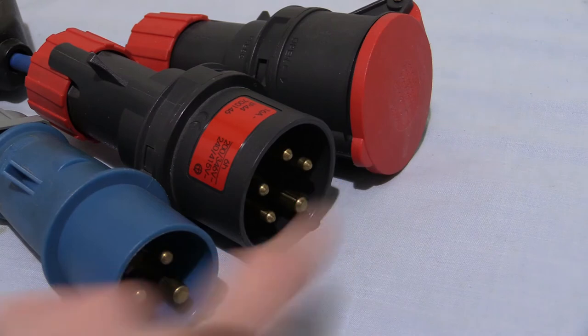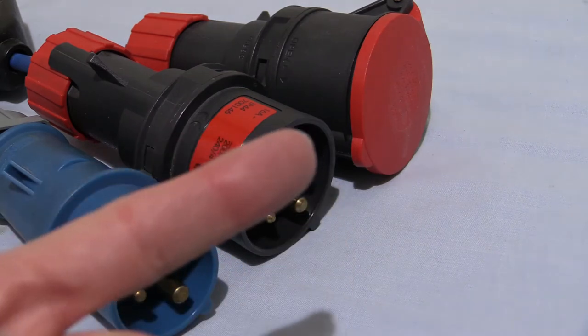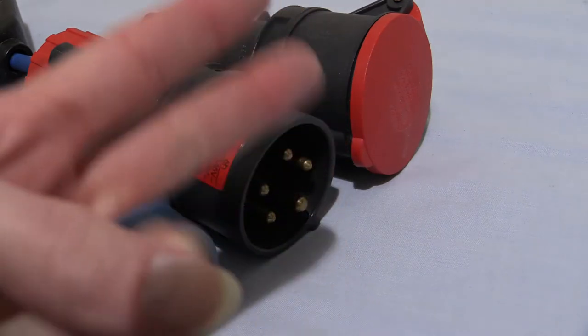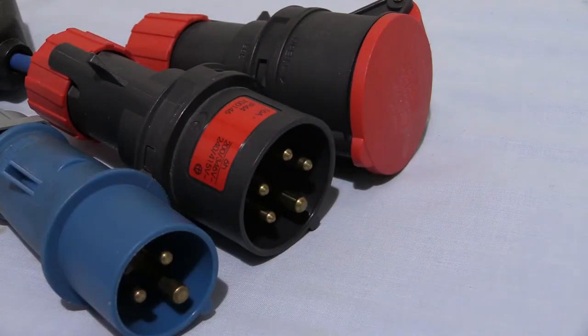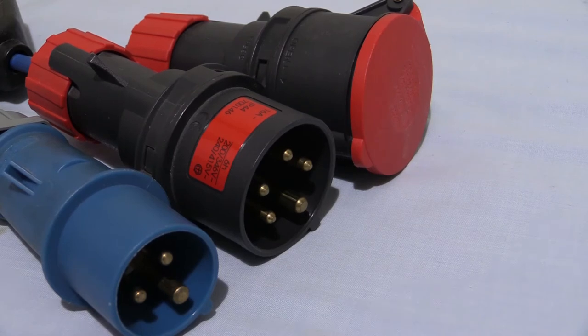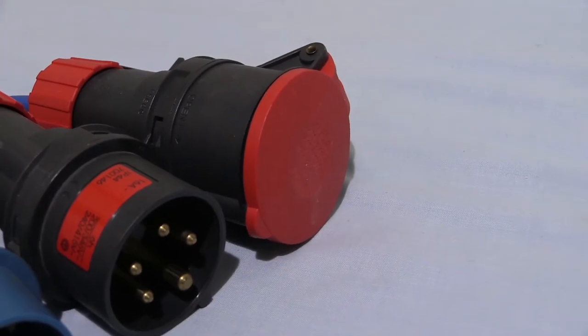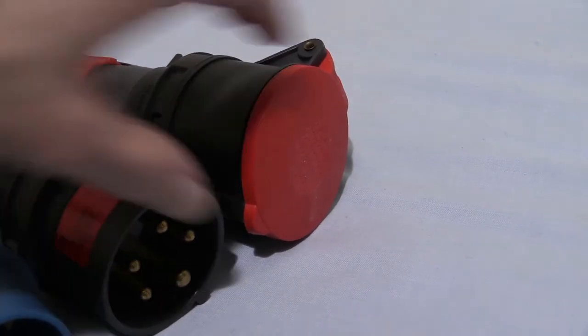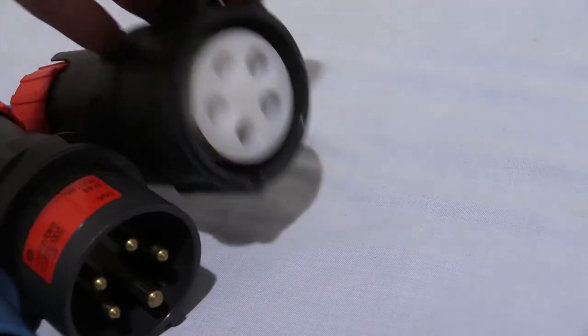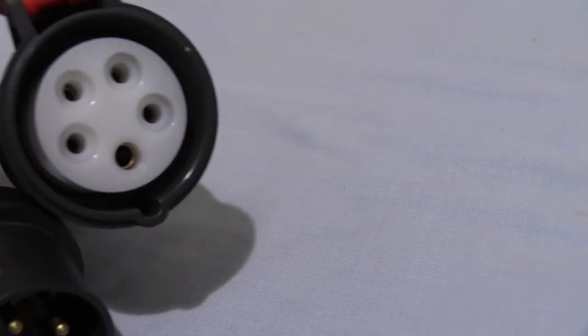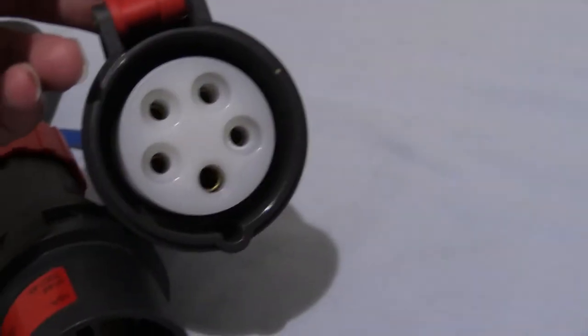As we can see, we've got five pins. Obviously one's earth, one's neutral, and you've got phase one, two, and three. The coupler has the same thing. Obviously when you open it up there'll be five holes for these five pins to go into.